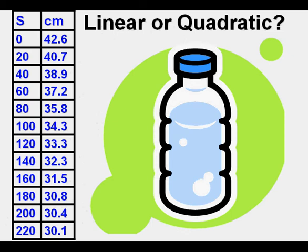There's a hole at the bottom of this bottle of soda, and over time, in the X column, or independent variable column, with S to the top, that's the number of seconds. And on the right is the column of centimeter level in the bottle.